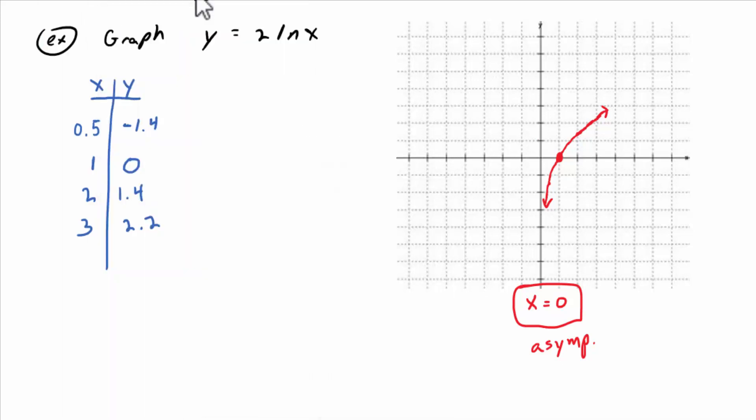What would the domain then be of this function? So it would go from 0 to positive infinity, left to right. Everybody agree with that? That'd be the domain, d for domain, and then what would the range be? It goes all the way down and all the way up. So negative infinity to positive infinity.